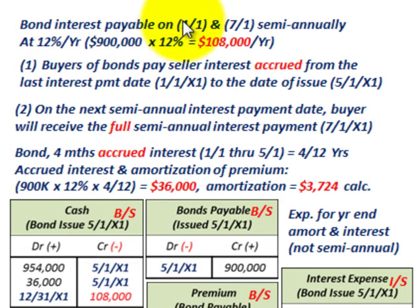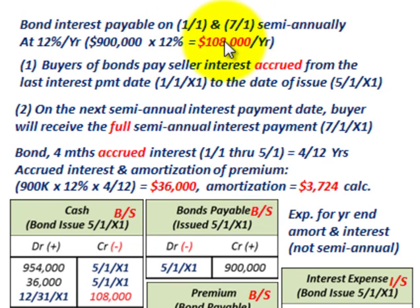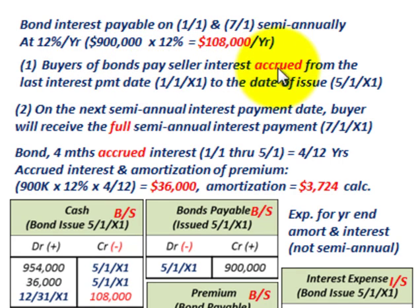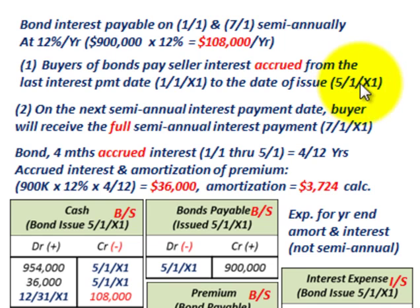Bond interest is payable on 1-1 and 7-1 semi-annually, and we'll look at the yearly total. At 12% per year on $900,000 par value, that's $108,000 of interest per year. When issuing bonds between interest dates, the buyer pays the seller the interest accrued from the last interest payment date — in this case from 1-1-X1 to the issue date of 5-1-X1 — which is four months of accrued interest.